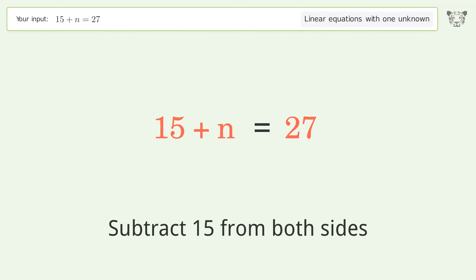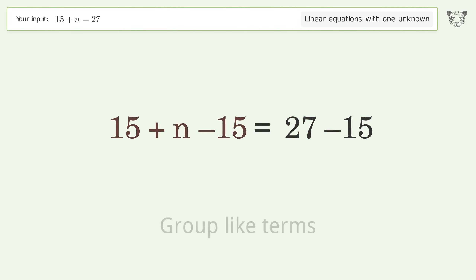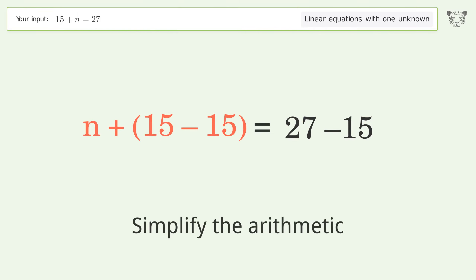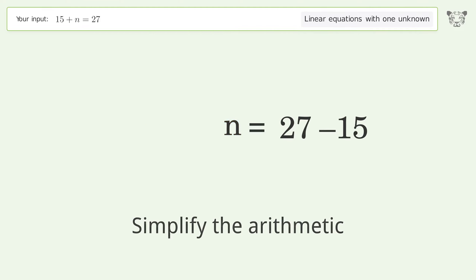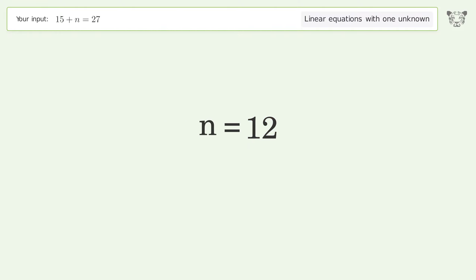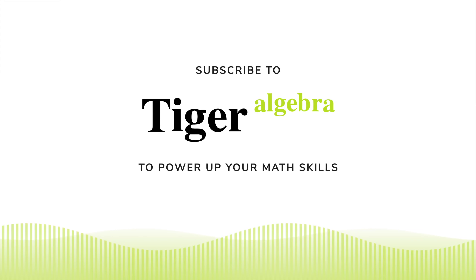Group all constants on the right side of the equation. Subtract 15 from both sides. Group like terms and simplify the arithmetic. And so the final result is n equals 12.